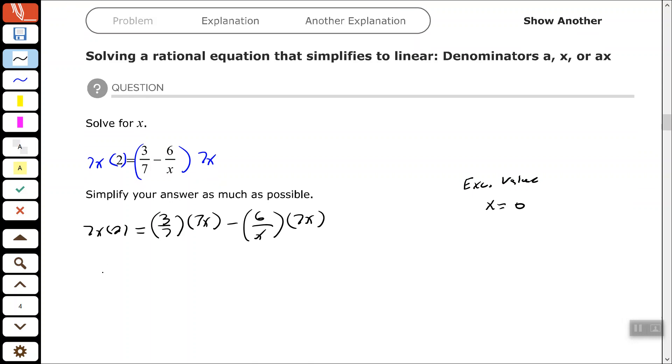All right, so 7x times 2. Let's go ahead and clear the fractions first. All right, so here, 3 over 7 times 7 times x, the 7s will cancel each other out. So I'm left with 3 times x.